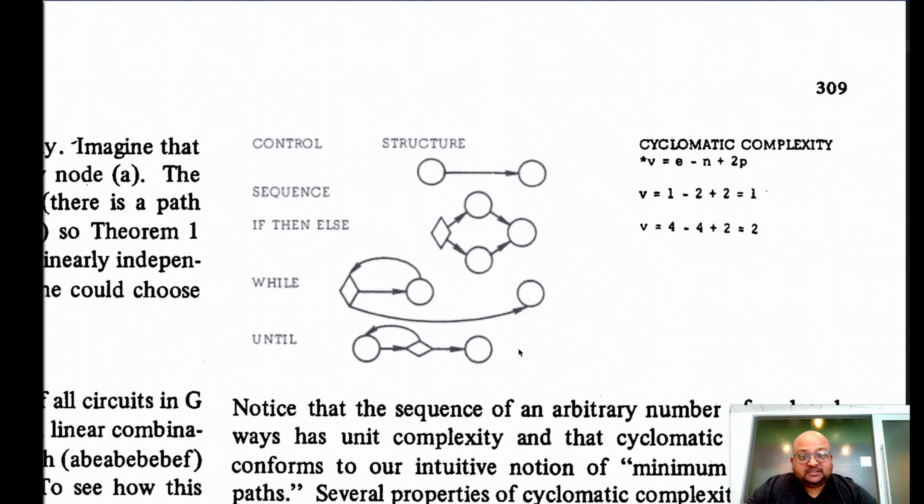Let's look at some common structured programming constructs along with what their cyclomatic complexity would be. If you have a simple sequence with no branching, its cyclomatic complexity is one. It has one edge, two nodes, and one connected component.